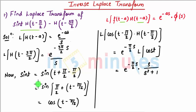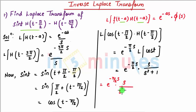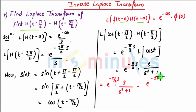Combining both terms, the final answer is: Laplace of sin(t) * [h(t - π/2) - h(t - 3π/2)] = e^(-(π/2)s) * s / (s² + 1) minus e^(-(3π/2)s) / s. That's the final answer.